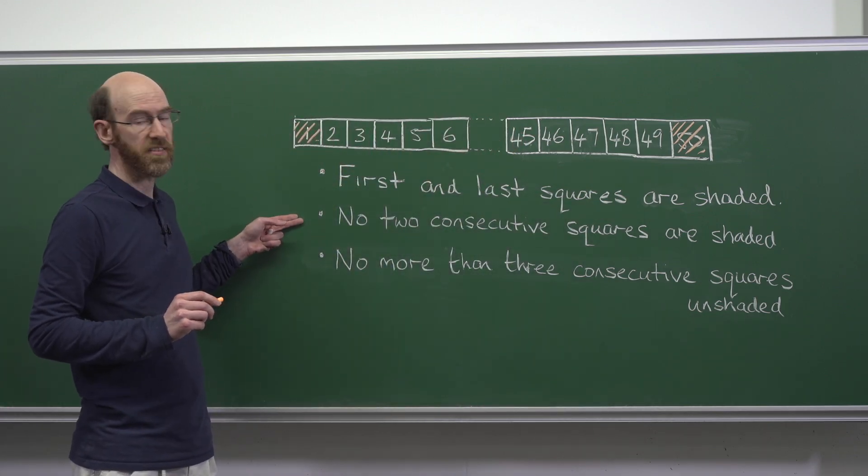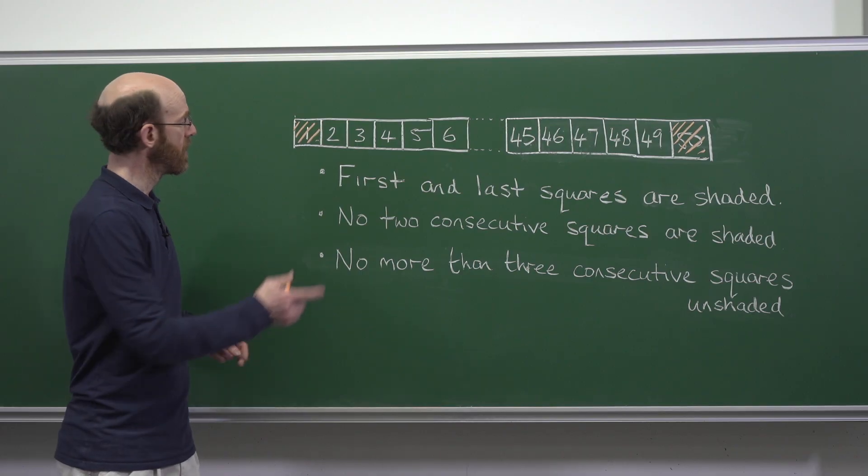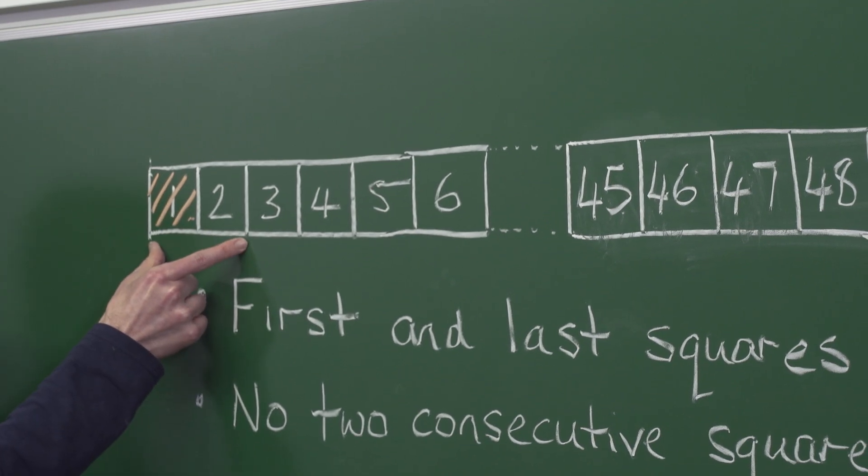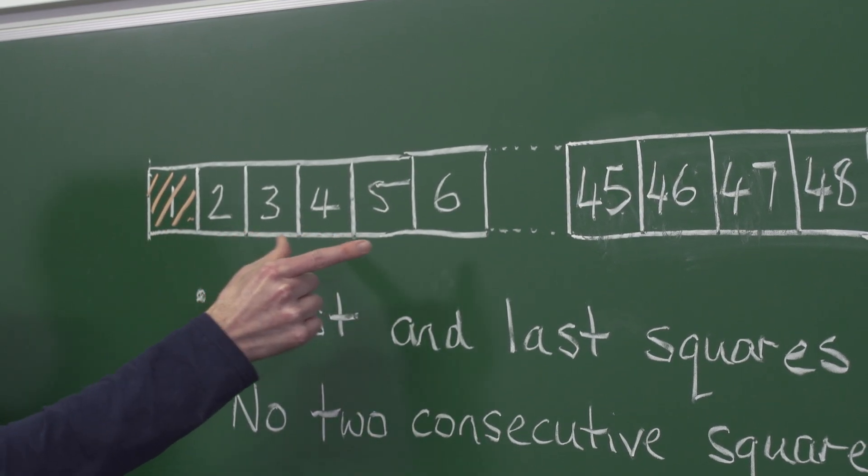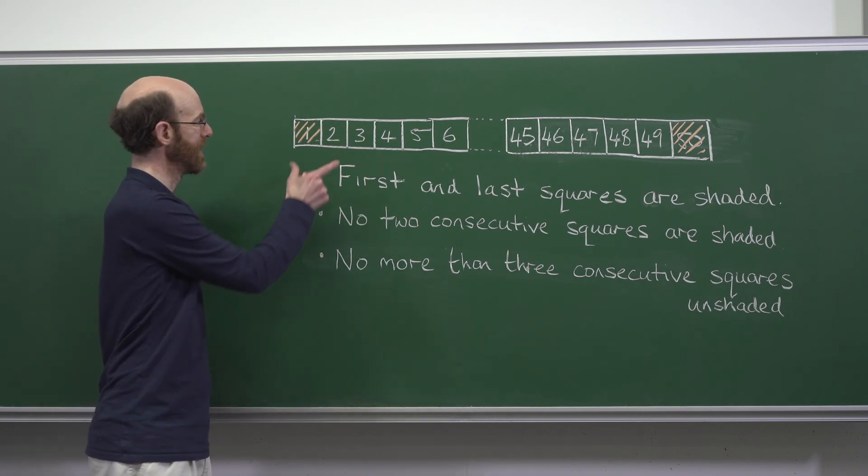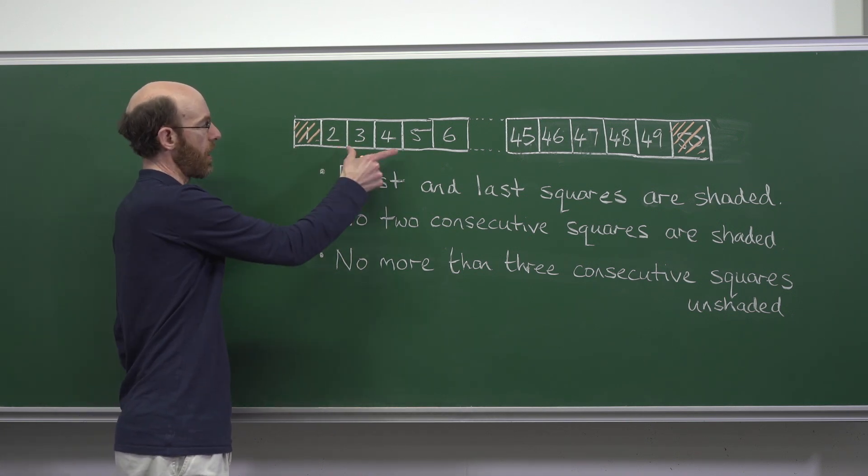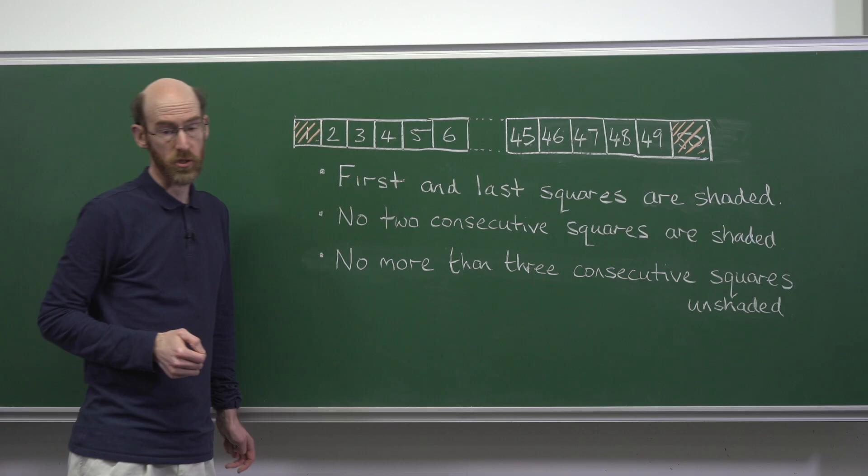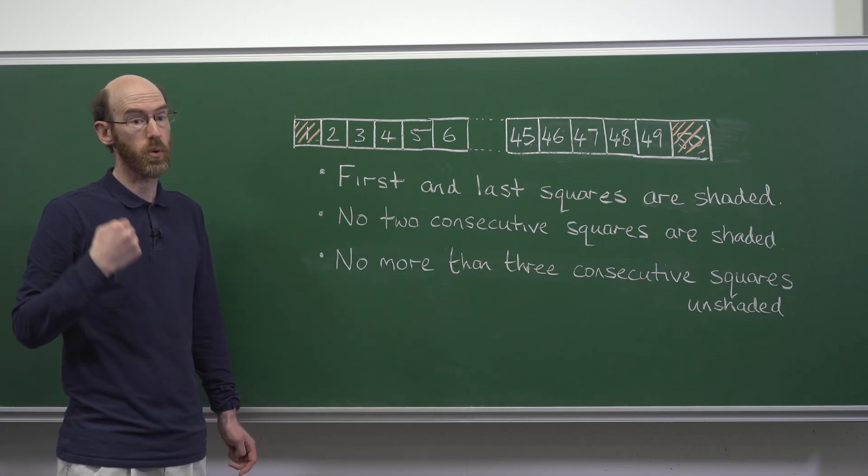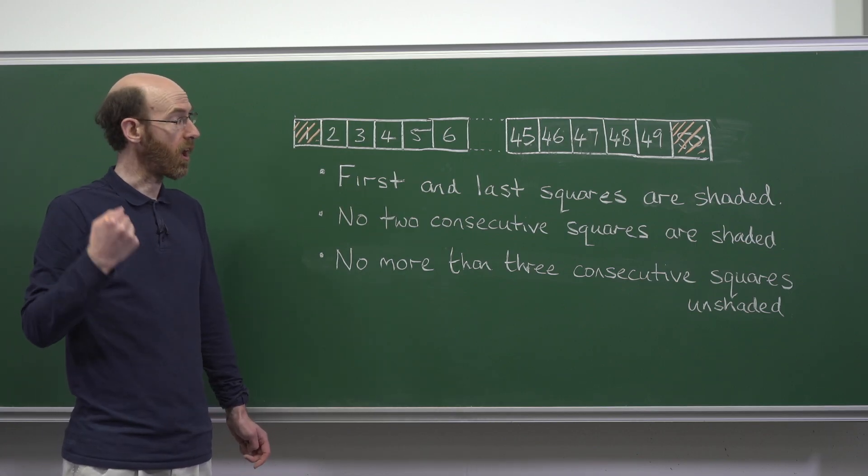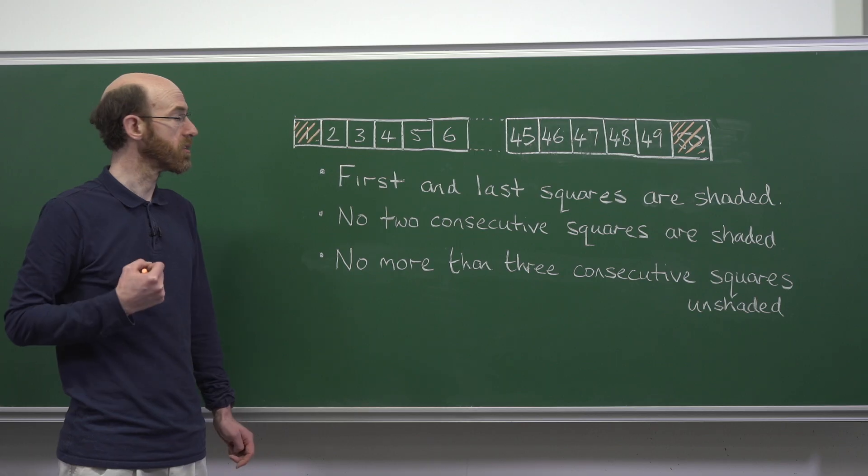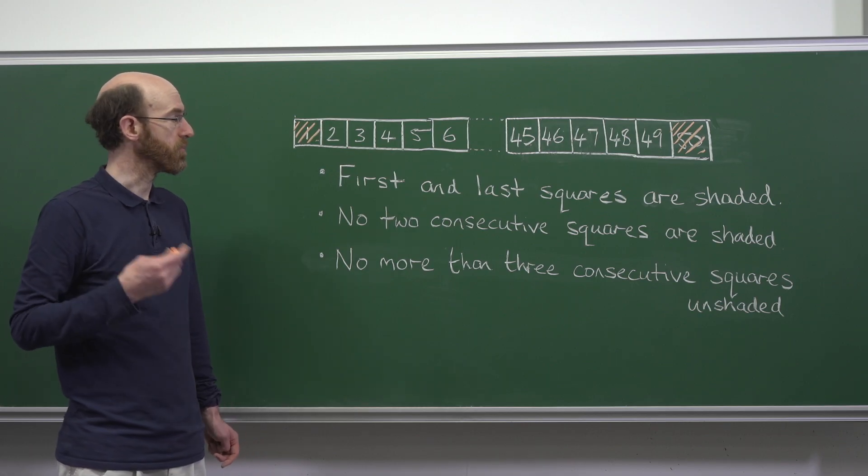No two consecutive squares are shaded, so in any of these dominoes no more than one can be shaded and we can break these up into 25 such dominoes. So that suggests 25 is the largest number, but let's see if we can construct a coloring to prove that.